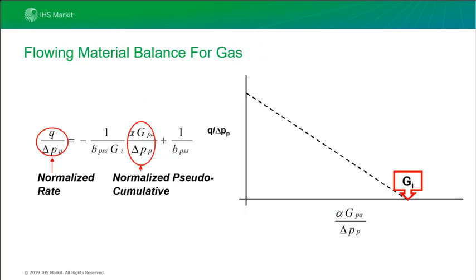The overall boundary dominated flow equation for gas looks very similar to the oil equation except that we substitute pseudovariables for their equivalent variables — wherever we have a pressure we put pseudopressure, and wherever we see time we replace it with pseudotime. We can follow the same logic as for oil reservoirs and turn this into a variable rate capable equation, noting that rate times time equals cumulative production. Now we have a boundary dominated flow equation applicable to gas reservoirs with their changes in properties, applicable to both variable rate and constant rate. Just like for oil, we plot the normalised rate versus normalised cumulative production and get a straight line through the data leading to the original gas in place.